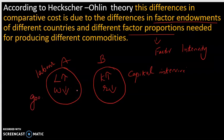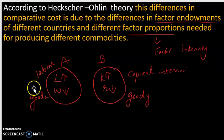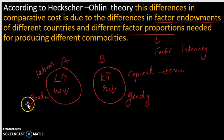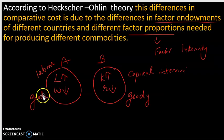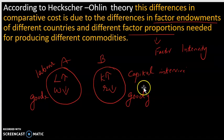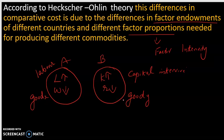Suppose country A is producing good X, which is a labor-intensive commodity, and country B is producing good Y, which is a capital-intensive commodity. Because the wage rate is low in country A, they are able to produce this labor-intensive commodity at a cheaper rate. And because capital is abundant in country B, they can produce the capital-intensive good Y at a cheaper rate. This is due to the cost of production difference.